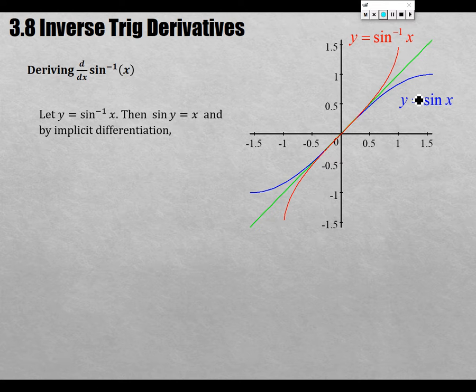So let y be sine inverse of x, and then because of what we know sine inverse means, sine y equals x. This is only for this unit now. We can finally do implicit differentiation on this expression. On the left side, you get cosine y times y prime, and on the right you just get 1.